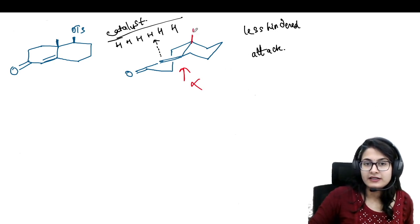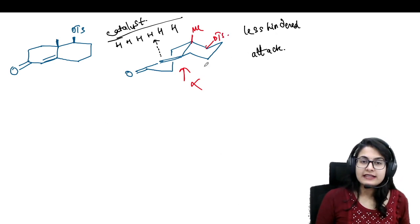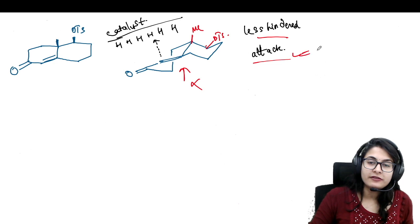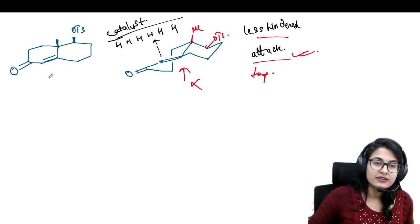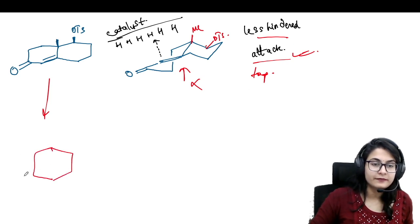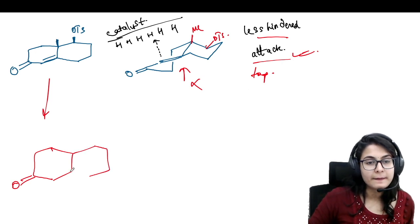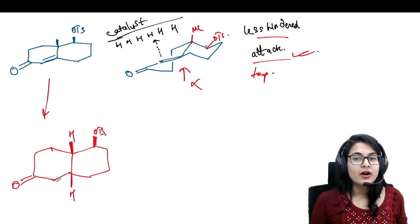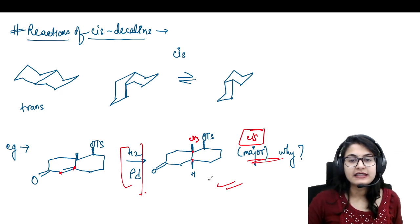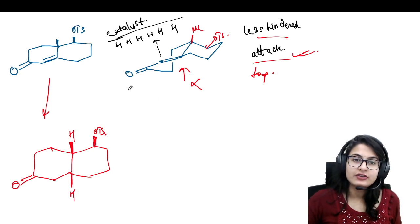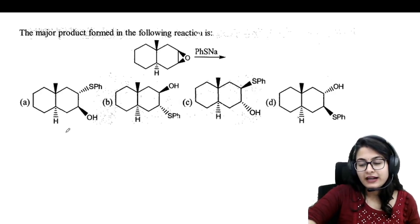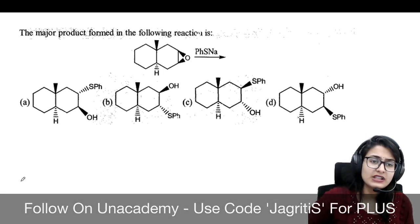Even though there is a methyl present and a tosylate present, since the above face is more accessible, the attack will be greater from the top. Less hindered attack is favored, which is from the top, and hence your product is the reduction where the hydrogen ends up on the same side as the methyl. There are CSIR-NET questions directly on this concept.